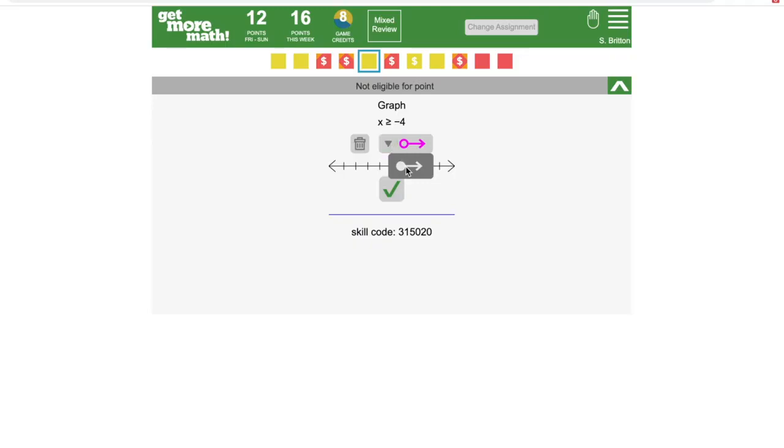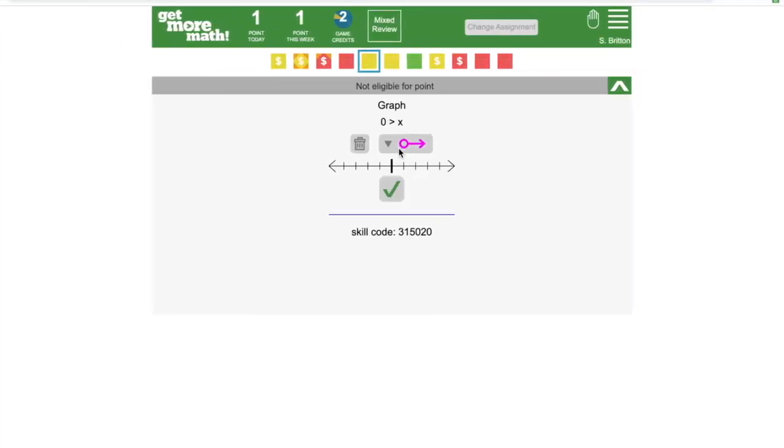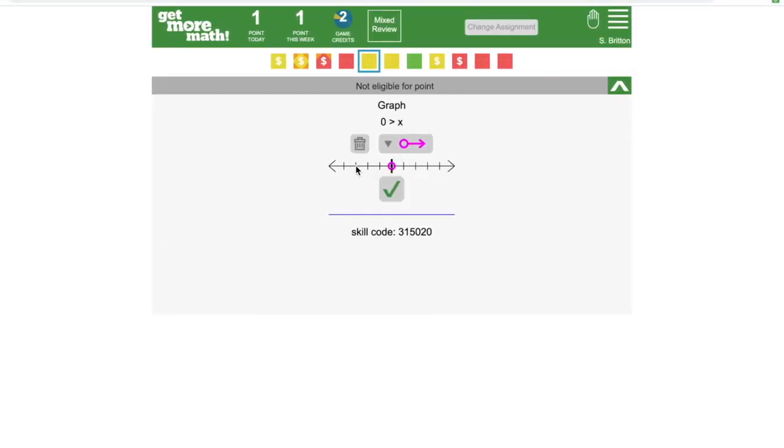All that this menu is for is choosing whether you want an empty circle or a filled circle. Even though the pictures of the rays on this menu are all pointing in the same direction, you can actually graph them pointing either way. So let's go ahead and graph this.